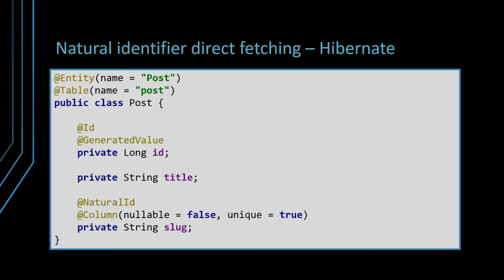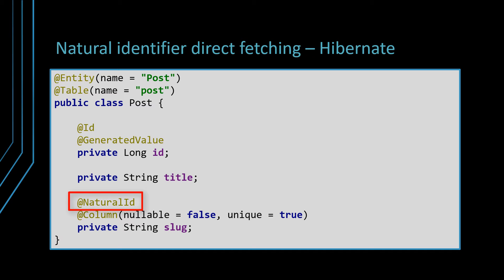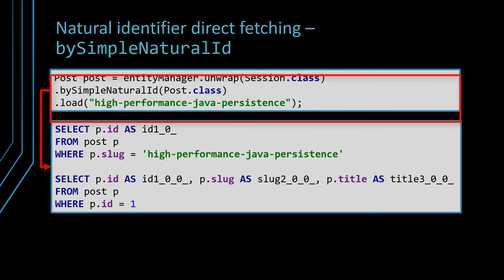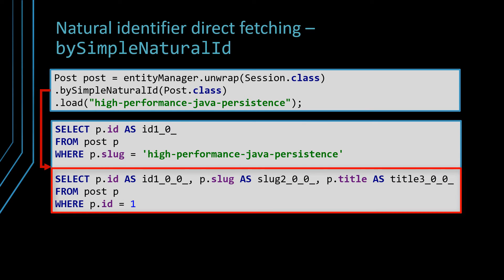With Hibernate, you can also fetch entities via their natural identifier. A natural identifier or business key is stored in a unique column, so that each table row can be uniquely identified by its associated natural identifier. To instruct Hibernate that a given entity property is mapped to a natural identifier column, the entity property needs to be annotated with the Hibernate-specific NaturalId annotation. Afterward, you can load the entity by its natural identifier using the bySimpleNaturalID Hibernate session method. Notice that there are two SQL queries that are executed: the first resolves the entity identifier for the entity having the provided natural ID, and the second loads the entity by its associated identifier if the entity is not already managed by the current persistence context.